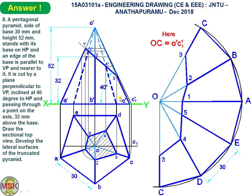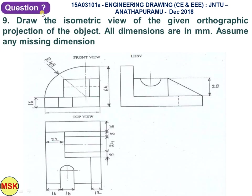Problem eight is complete. If in doubt, pause the video and clarify before moving on. Problem number nine: you are given orthographic views of an object and must draw the isometric view. The object has a complex shape that is difficult to describe verbally.